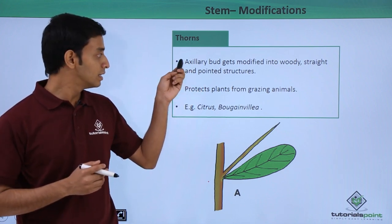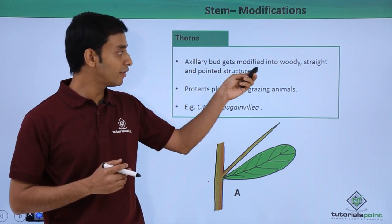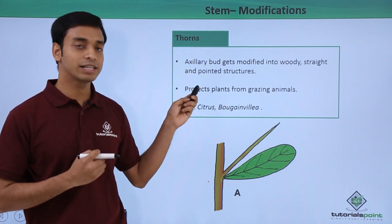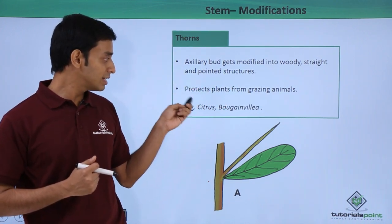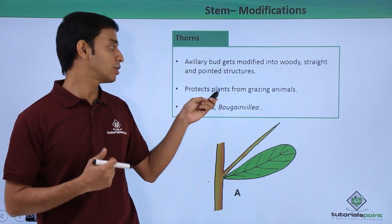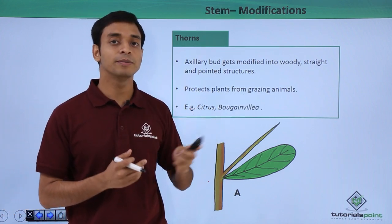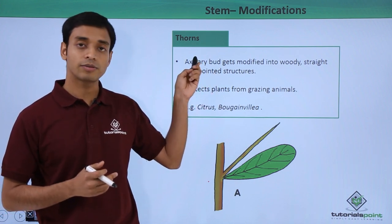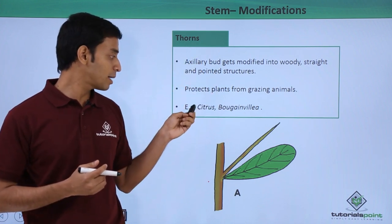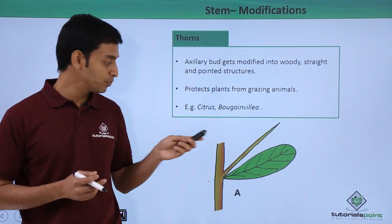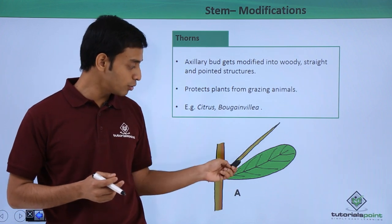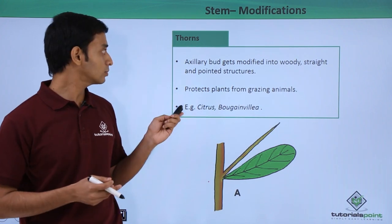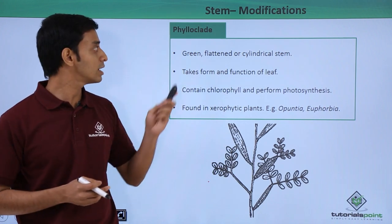The next modification is thorns. The axillary buds get modified into woody, straight, and pointed needle-like structures. These provide protection for the plant from grazing animals, so that animals cannot eat these plants. Examples are citrus and bougainvillea. These are modified stem structures.